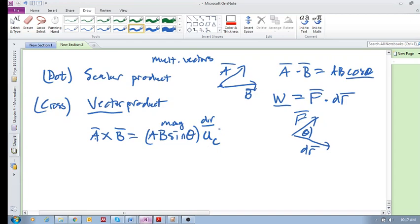That is perpendicular to these two vectors. This guy is perpendicular to A and B, so you've got a magnitude and a direction.